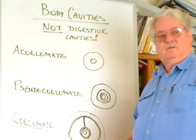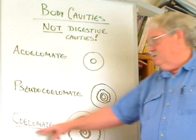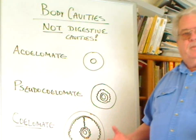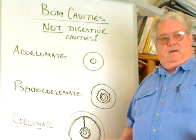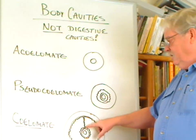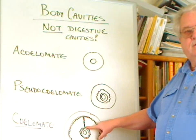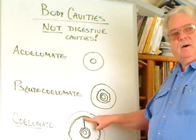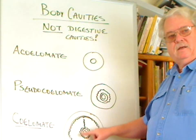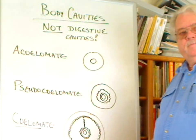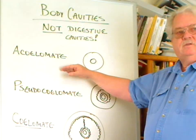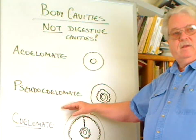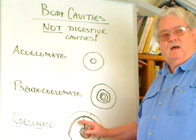Finally, most of the rest of the organisms in the phyla we study are truly coelomate. They have true body cavities — a space between the gut and the body wall that is lined. Here I've illustrated the lining around the gut tube, around the body wall, and connecting between the body wall and the gut tube in order to hold the gut in place.